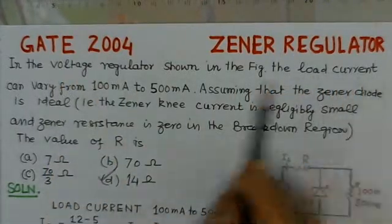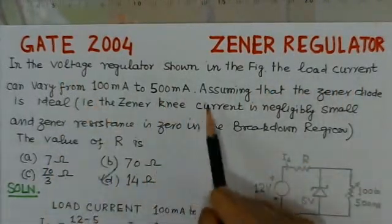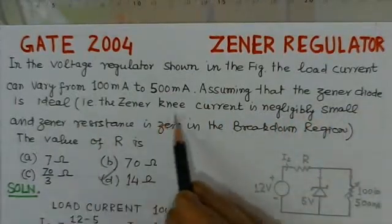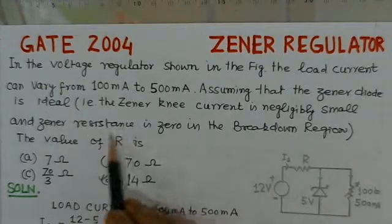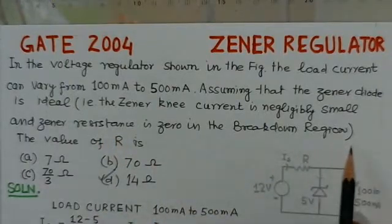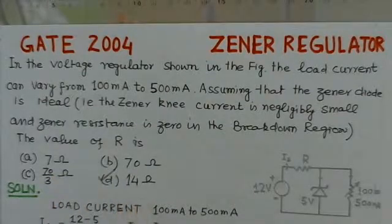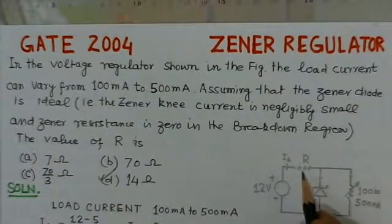I will read out the problem. In the voltage regulator shown in the figure, the load current can vary from 100mA to 500mA. Assuming that the Zener diode is ideal, that is the Zener knee current is negligibly small and the Zener resistance is zero in the breakdown region, the value of R is: 7Ω, 70Ω, 70/3Ω, or 14Ω.